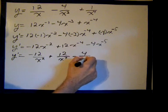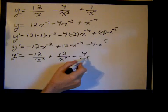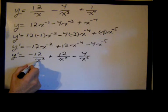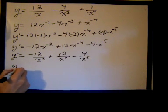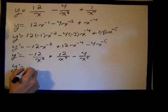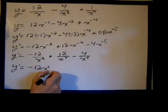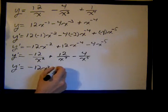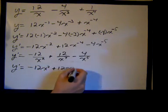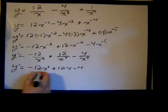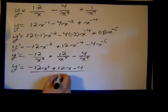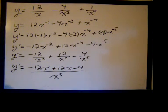The common denominator is x to the 5th, we need x cubed attached to the negative 12, so we have y prime equals negative 12 times x cubed plus 12 x minus 4 all over x to the 5th. That's it.